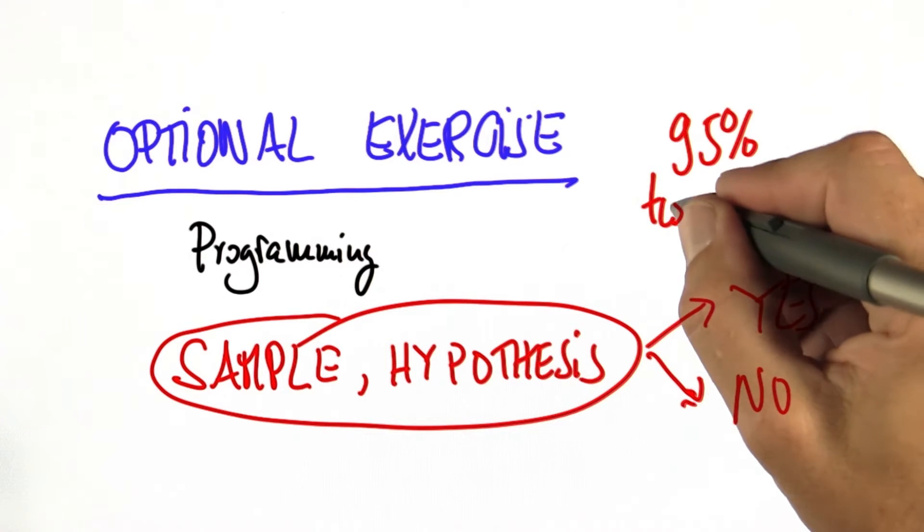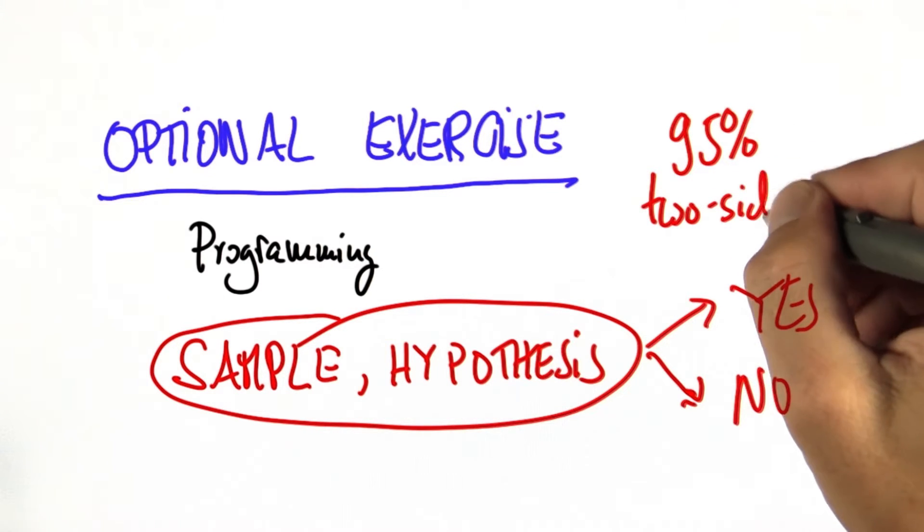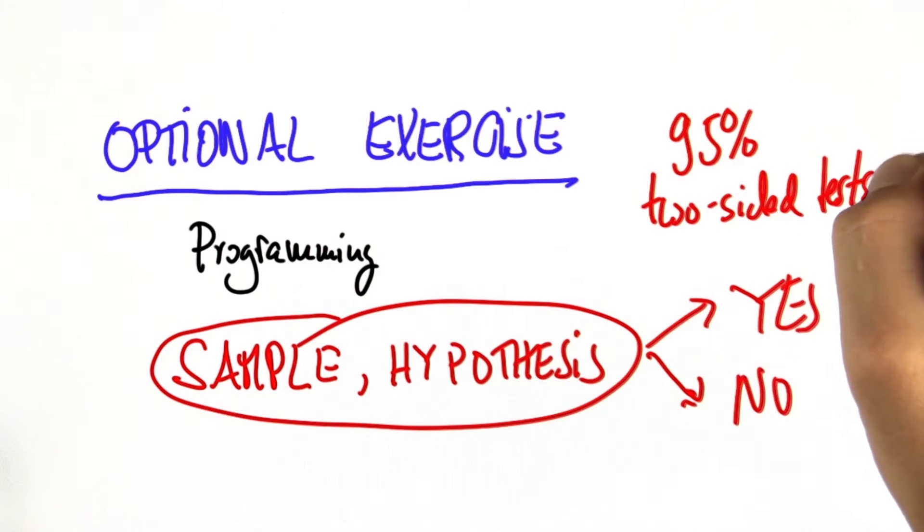So this piece of code should just do it. And for simplicity, I assume 95% confidence and two-sided tests.